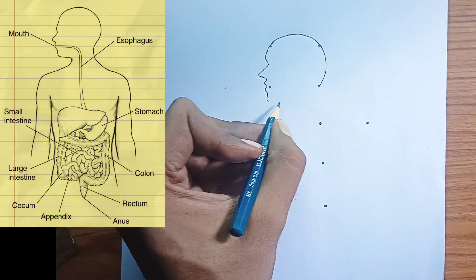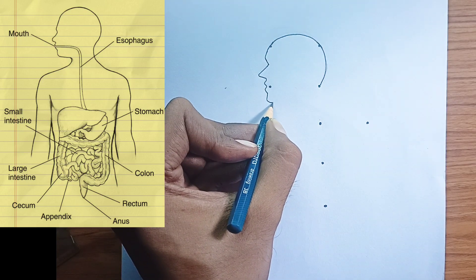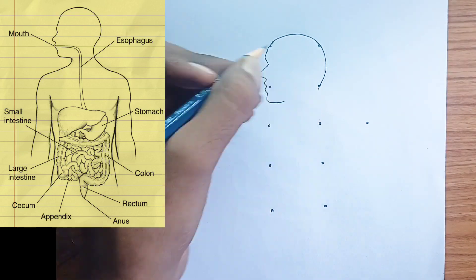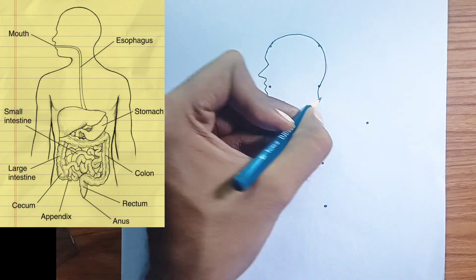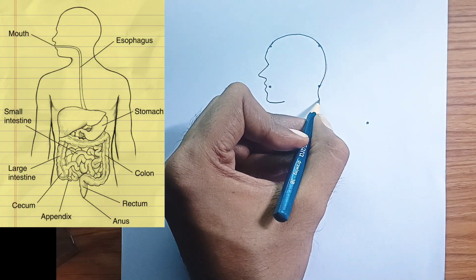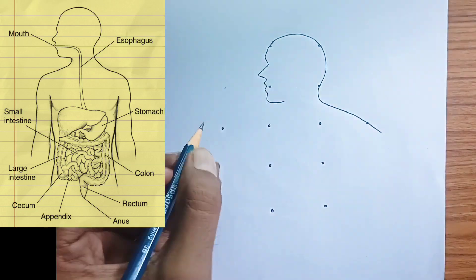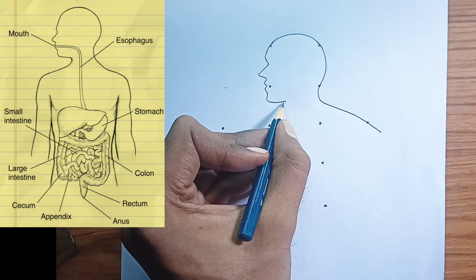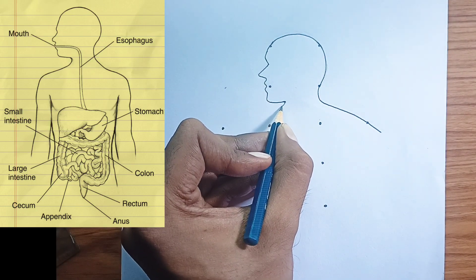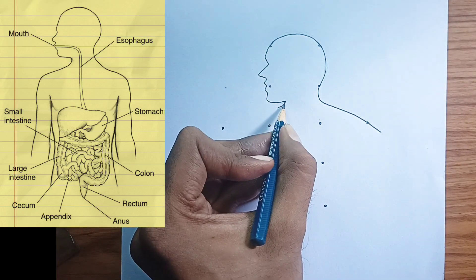Stomach: a J-shaped organ where food is mixed with gastric juices, containing acid and enzymes like pepsin, to continue chemical and mechanical digestion.